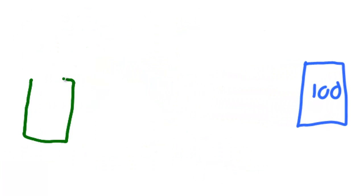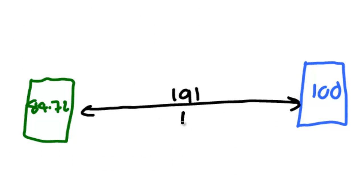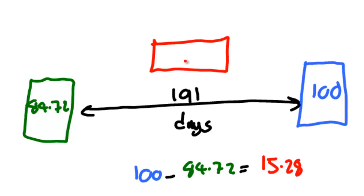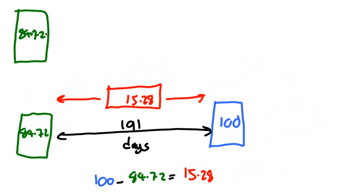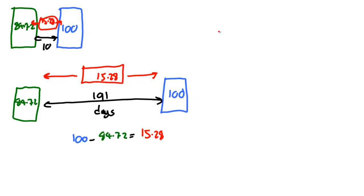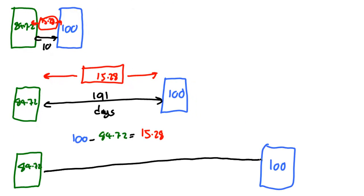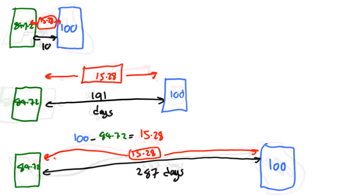But this fails to take into account any notion of time. The difference between the 100 and 84.72 is $15.28, and this is Sean's profit. But it would be better to make $15.28 in 10 days rather than in 191 days. And it is still better to make $15.28 in 191 days than it would be to make it in 287 days.